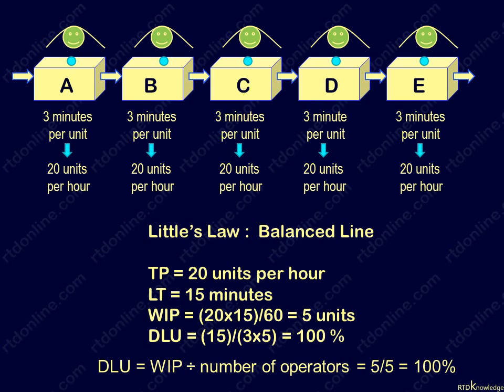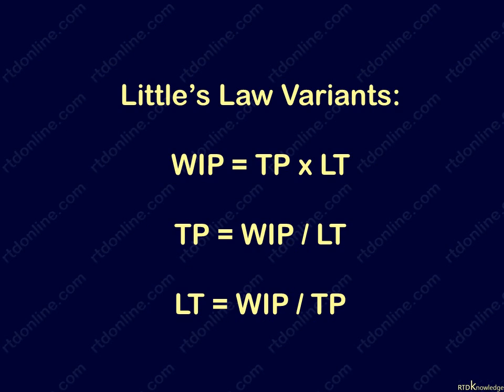It is clear to see that utilization here is 100% because everyone has a job to do all the time. Also, in a balanced line, it is easy to remember that the number of operators is always equal to the number of work in process.